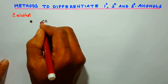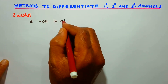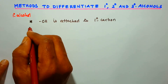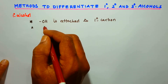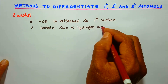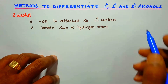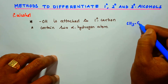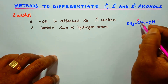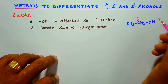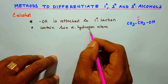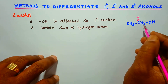Primary alcohol is one in which the OH group is attached to a primary carbon. Primary carbon means the carbon bearing the functional group contains two alpha hydrogen atoms. For example, CH3-CH2-OH: the carbon bearing the OH group is the alpha carbon, and it carries two hydrogen atoms — those are called alpha hydrogens.